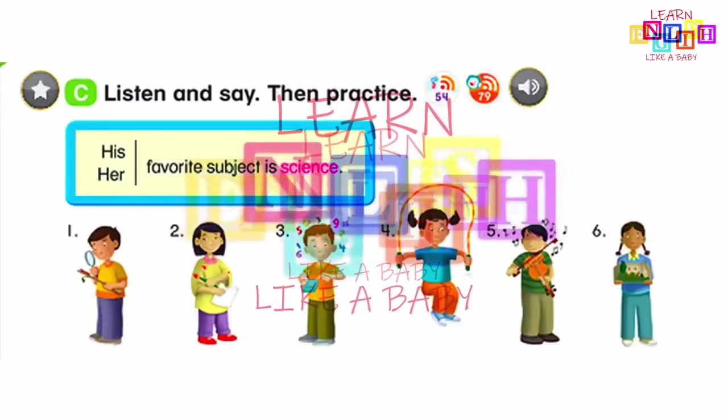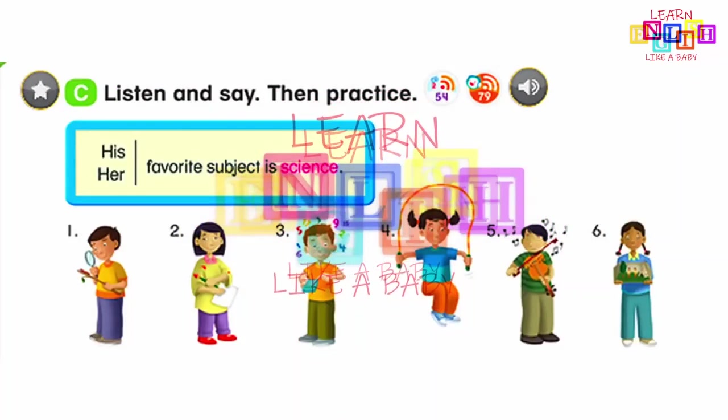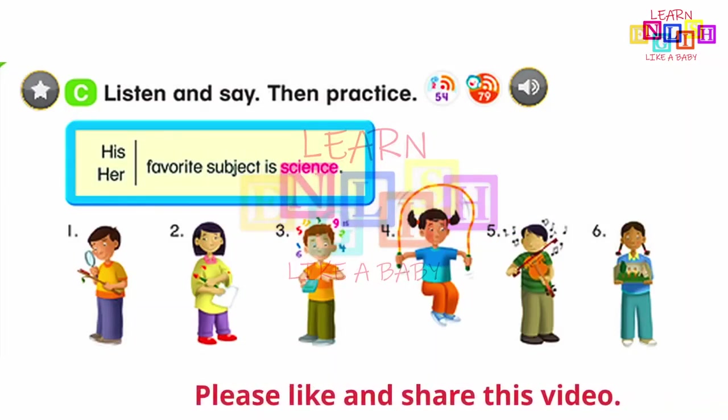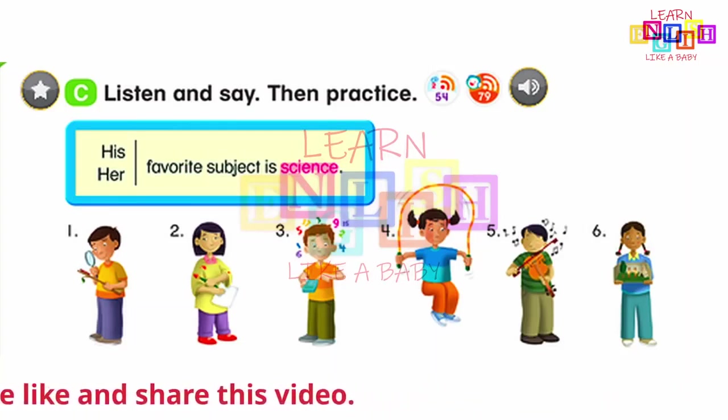Page 73, C: Listen and say, then practice. His favorite subject is science. Her favorite subject is science. One: His favorite subject is science. Two: Her favorite subject is art. Three: His favorite subject is math. Four: Her favorite subject is P.E. Five: His favorite subject is music. Six: Her favorite subject is social studies.